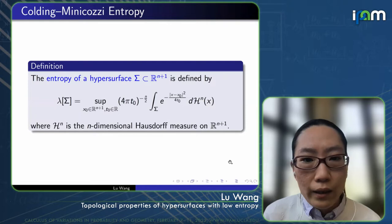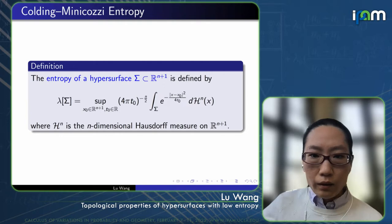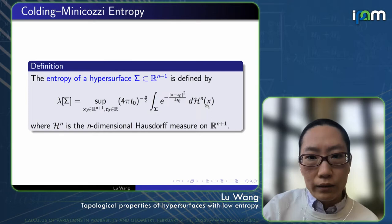In the case that sigma is a smooth hypersurface, this is the same as the volume element on sigma.